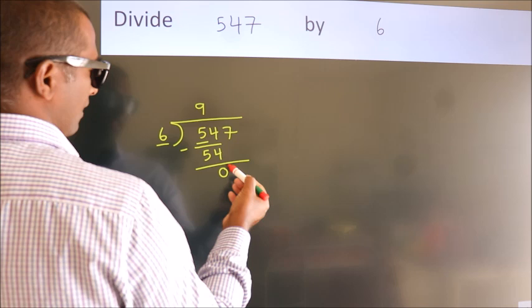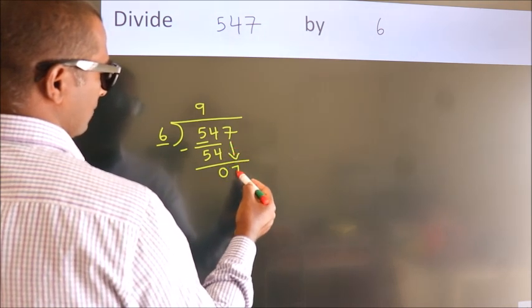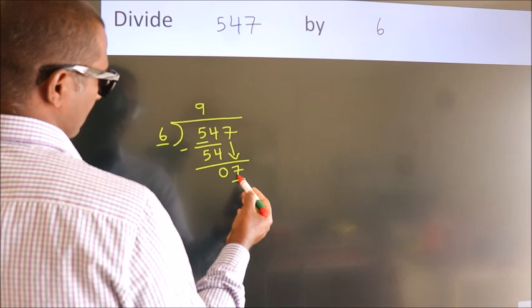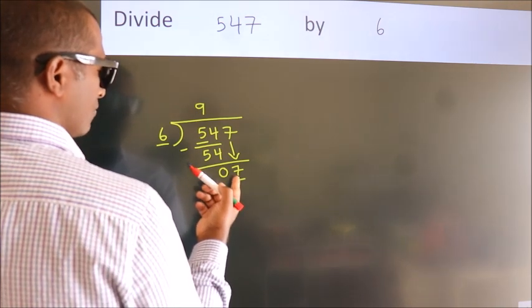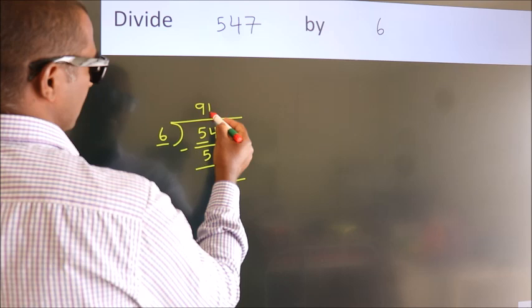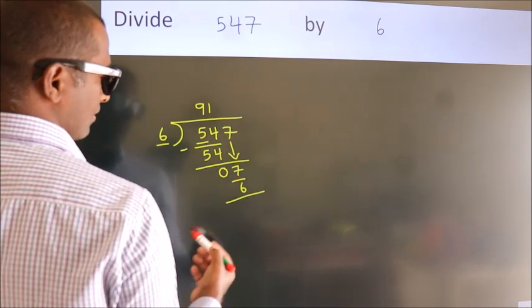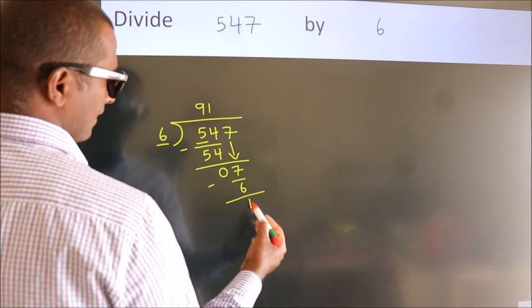After this, bring down the beside number. So, 7 down. A number close to 7 in the 6 table is 6 ones, 6. Now we subtract and get 1.